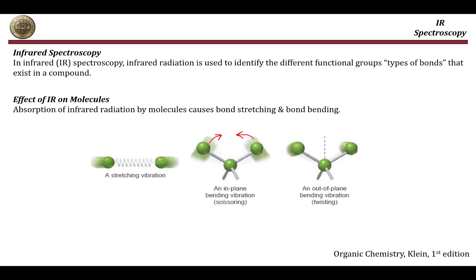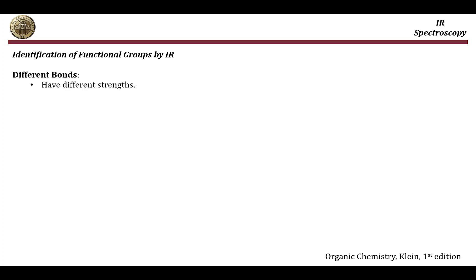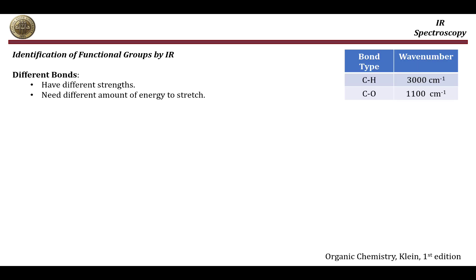Because of these vibrations, we are able to identify what type of bonds and functional groups exist in a compound using IR radiation. In a molecule, there are different types of bonds, each with its own strength. Each bond requires a different amount of energy to be stretched, compressed, or undergo in-plane or out-of-plane vibration. For example, a carbon-hydrogen bond requires a wave number of 3000 cm⁻¹, whereas a carbon-oxygen bond requires 1100 cm⁻¹.